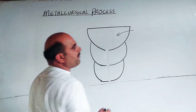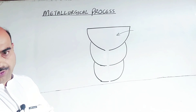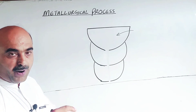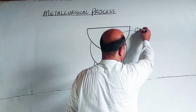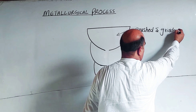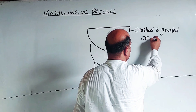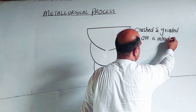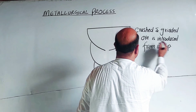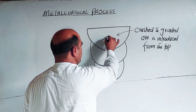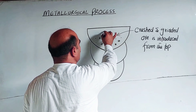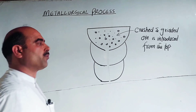In the procedure, after the ore is crushed and ground into powder, the ore is introduced from the top. It contains both the metallic portion and the rocky portion. The ore is added from the top of the apparatus.